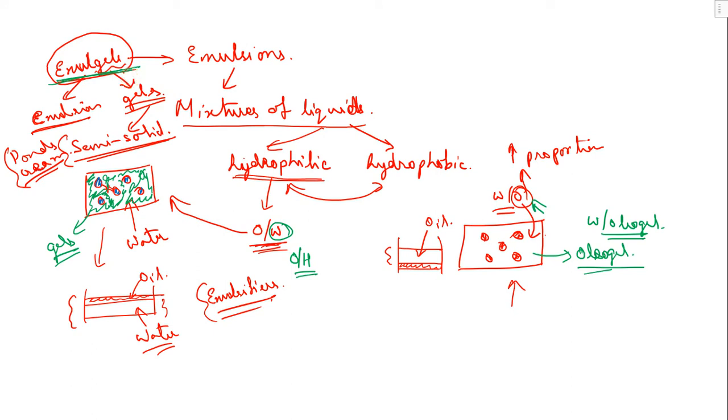Since they are gel, they have shear thinning property and other properties. They retain the advantages of emulsions, but due to the properties of the gel-based system, the thermodynamic stability is increasing manifold. It carries the advantages of both emulsions and gels.